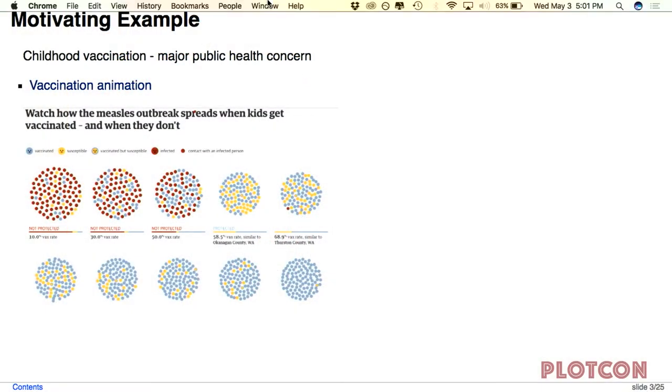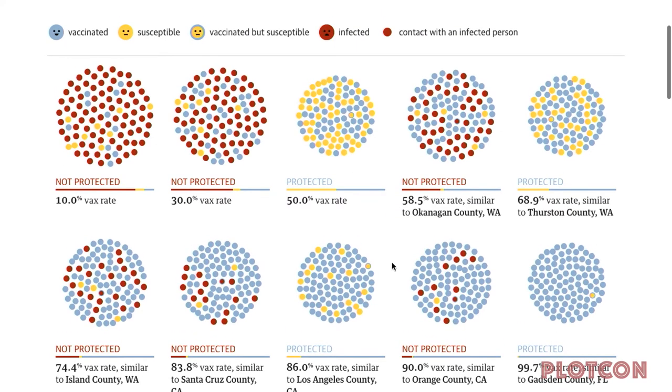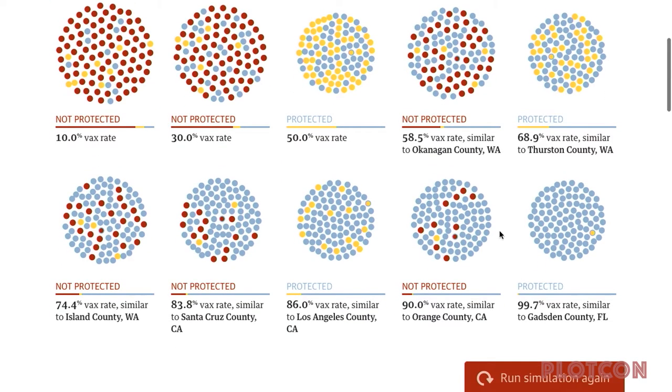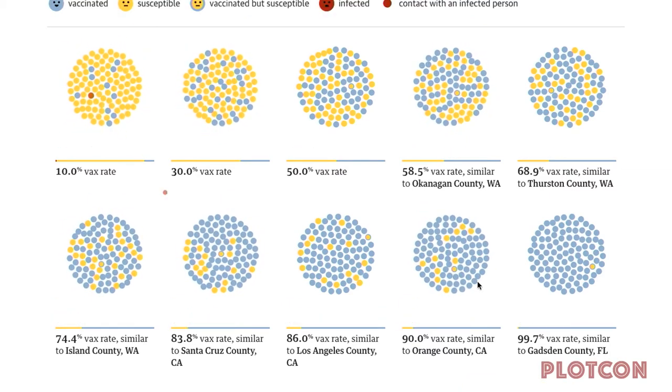So here's the motivating example. This is a fun animation from the Guardian. You can see here that they have all these different populations. The blues are vaccinated for measles, the yellows are susceptible to measles, the yellows with the blue outline have been vaccinated but they're still susceptible. And then once they turn red, they're infected. Once I start running the simulation, there's some red ones flying in, infecting the populations.